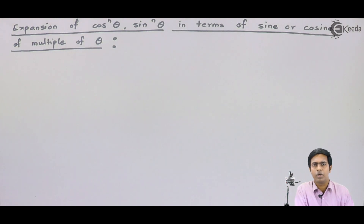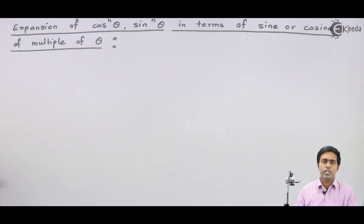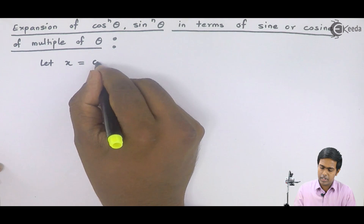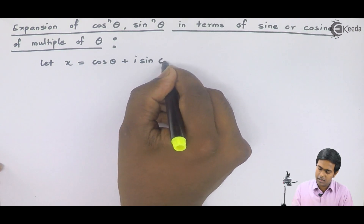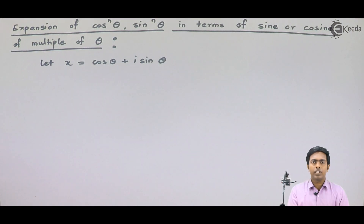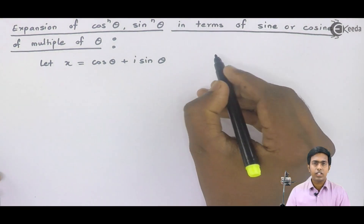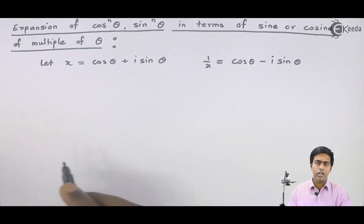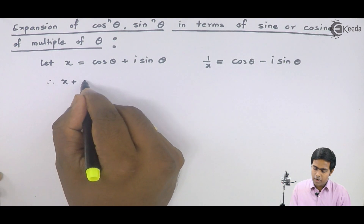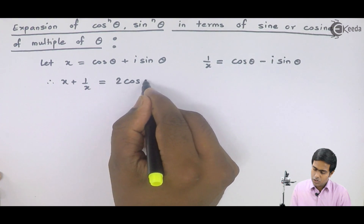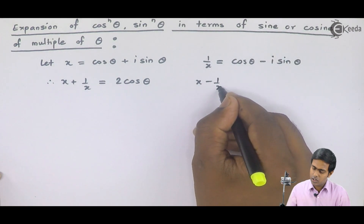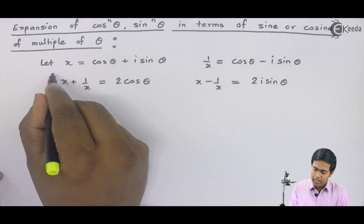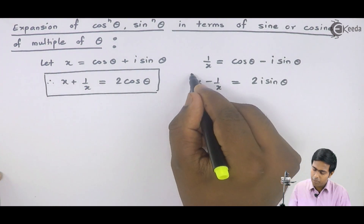Let us see how to expand the power terms in the multiples of theta. For this, I will consider a complex number x represented as cos(θ) + i·sin(θ). We have seen that if x = cos(θ) + i·sin(θ), then 1/x = cos(θ) - i·sin(θ). Adding these two terms gives x + 1/x = 2cos(θ), and subtracting gives x - 1/x = 2i·sin(θ).